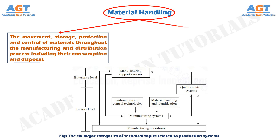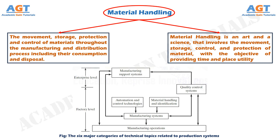In other words, material handling is an art and a science that involves the movement, storage, control and protection of material, with the objective of providing time and place utility. In this figure, we can see the six major categories of technical topics related to production systems, which are to be known in the study of materials handling.